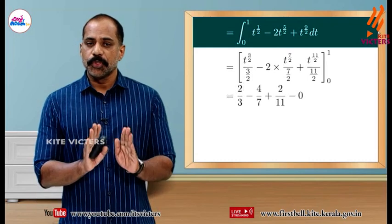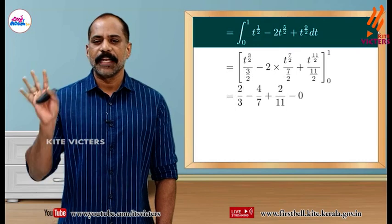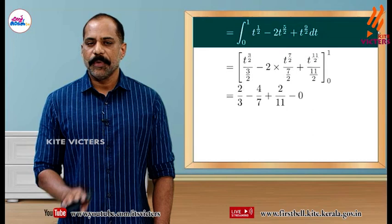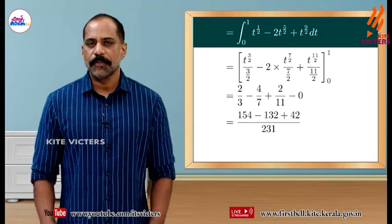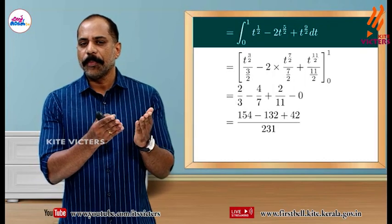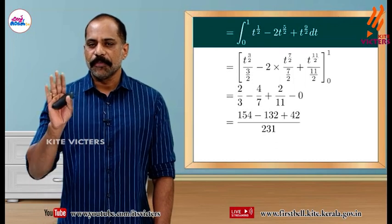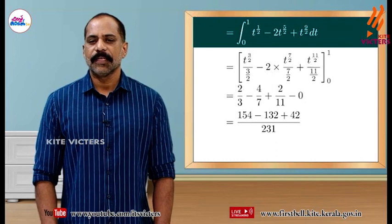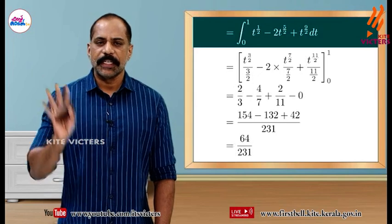Substituting the limits gives 2 by 3 minus 4 by 7 plus 2 by 11. Finding a common denominator of 231: this gives 154 minus 132 plus 42, all over 231, which equals 64 divided by 231.